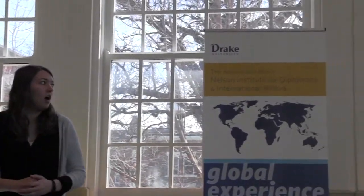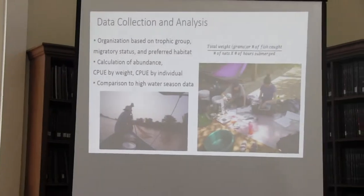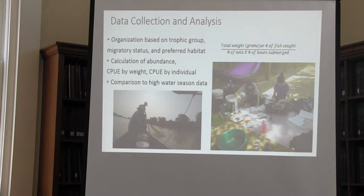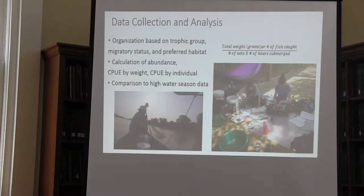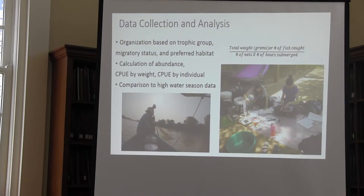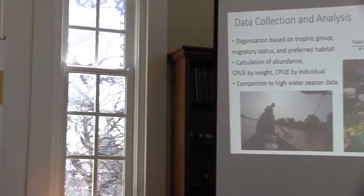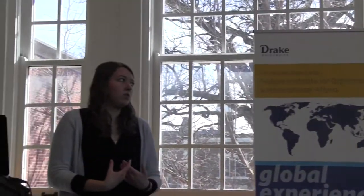Fish assemblage looks at what different species are caught, what groups they belong to, whether they migrate during the seasonally flooded area or not, and their preferred habitat — whether that's a stream or the lake bottom. We also calculated relative abundance, meaning what proportion of the total catch each species represents. Catch per unit effort is a measure of how many fish, or how many pounds of fish, you can catch in a given amount of time with a given amount of effort — essentially how easy it is to catch fish and how many fish are available.